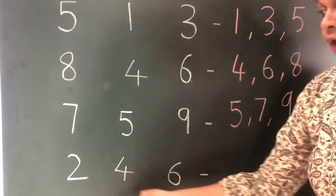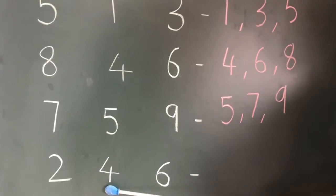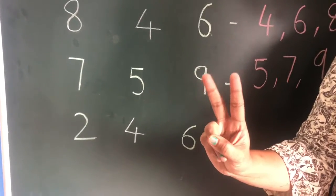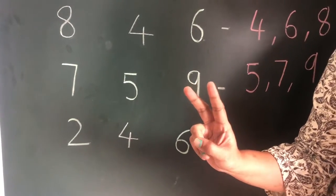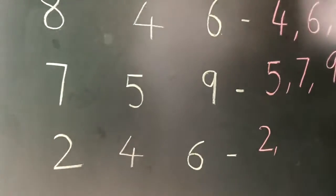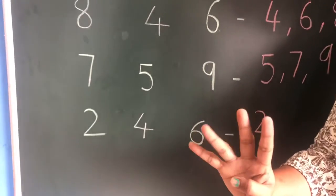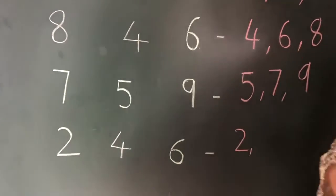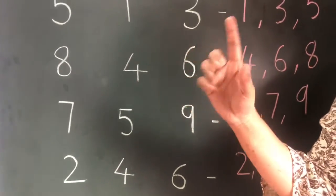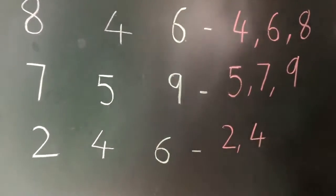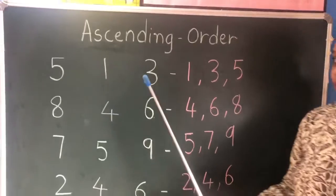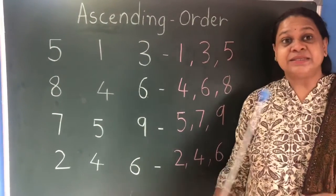The next set is two, four, and six. We count: one, two — two is first, so we write two here. After two, three, four — four will come next. And after four, five, six — so we take six. Now you understood.